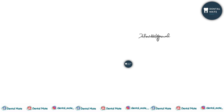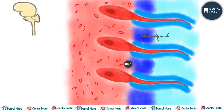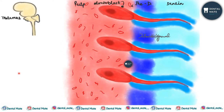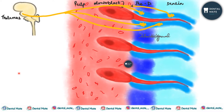First, if we talk about the direct neural stimulation or direct innervation theory — the odontoblasts are present in the pulp, this is the pre-dentine layer, this is the dentine layer, and these are the dentinal tubules in which the odontoblastic processes are present. According to the direct innervation theory, there are certain nerve endings present in the dentine.